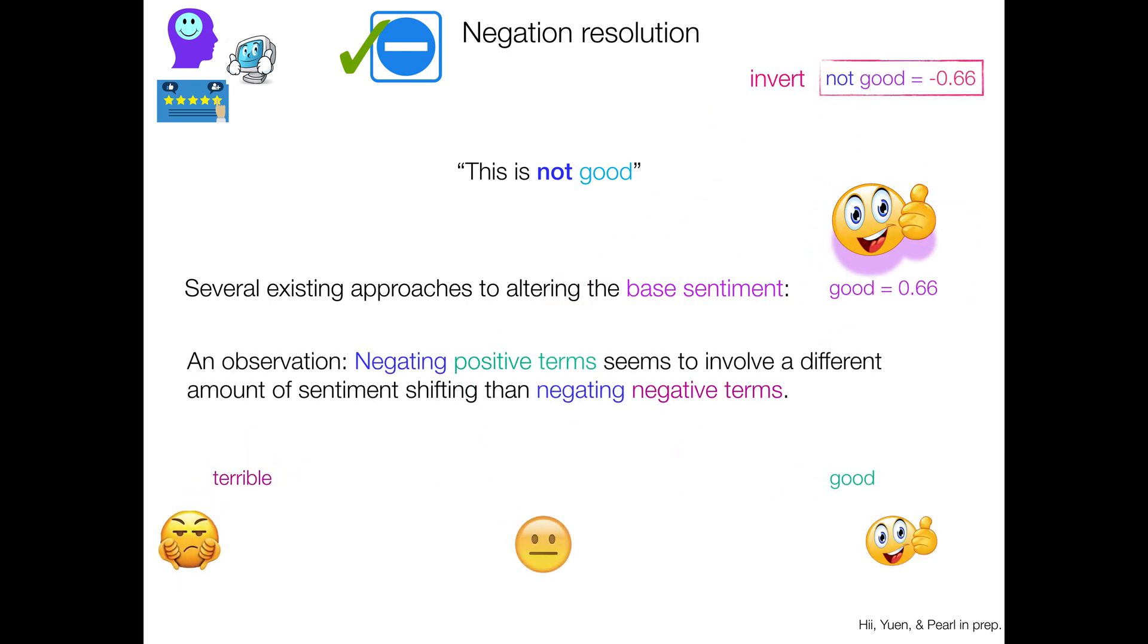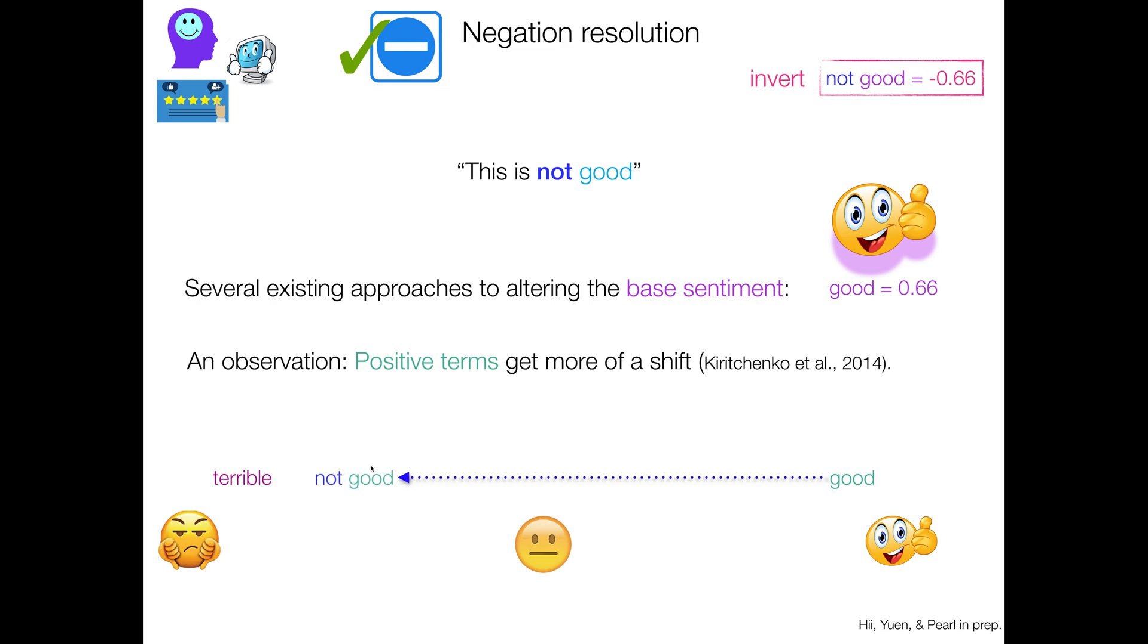So an observation that some people made was that negating positive terms like good seems to involve a different amount of sentiment shifting, if you will, than negating negative terms like terrible. So for example, positive terms get more of a shift downwards. So you go from good to not good, you're like down here. It's kind of bad.